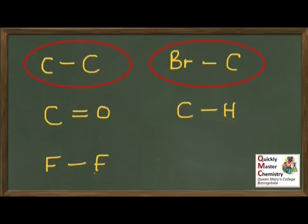Next, the bromine-to-carbon bond. In this case, bromine is significantly more electronegative than carbon. This means the pair of electrons in the bond will be pulled closer to the bromine, giving it the delta-minus charge, and the carbon the delta-plus charge. So the carbon-bromine bond is a polar bond.